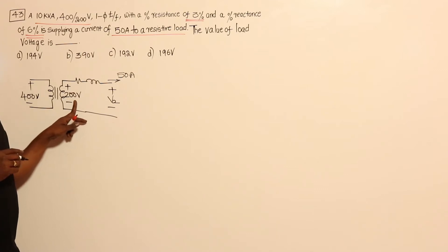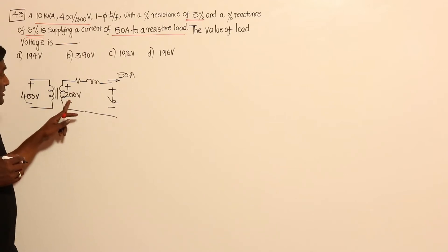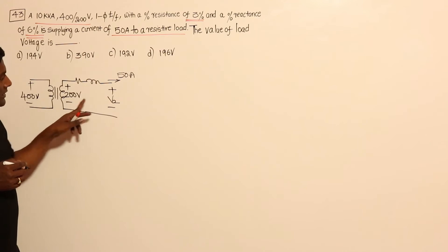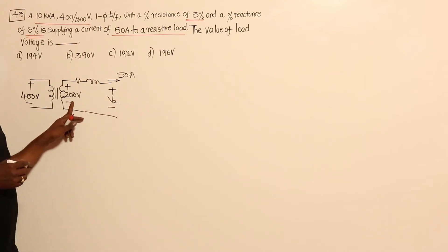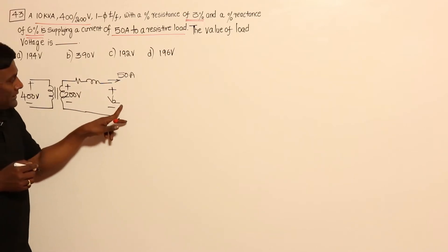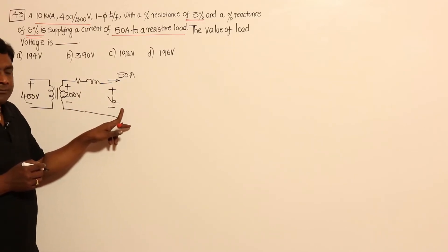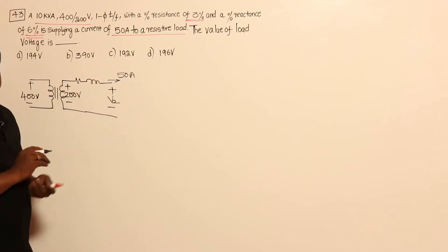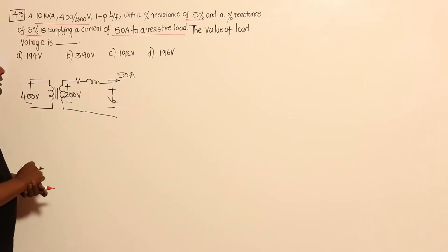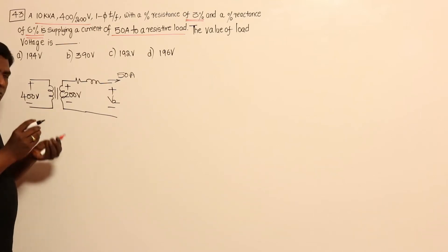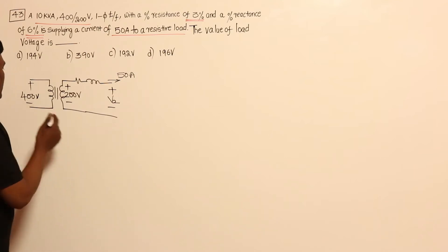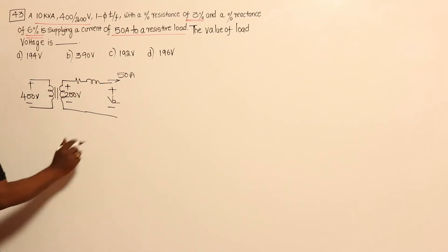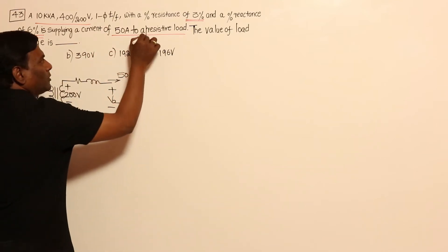Is this a power transformer or a distribution transformer? It should be a distribution transformer, because in a distribution transformer a tap changer will not be there, so I cannot control the HV side voltage — I can only control the LV side voltage. So when they ask for the receiving-end voltage, it should be a distribution transformer. The load is resistive, so unity power factor.